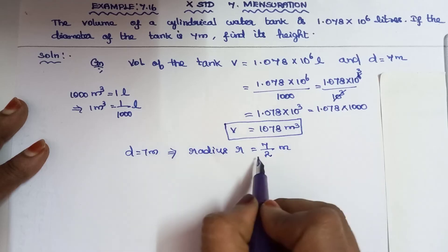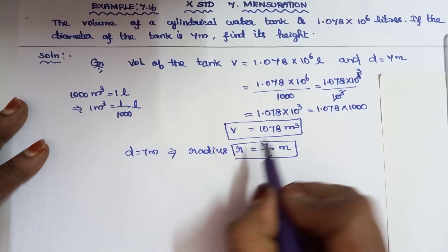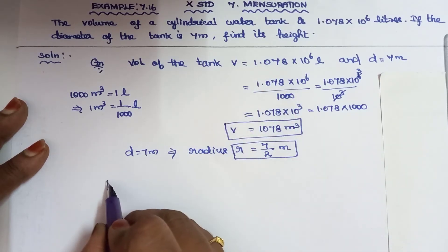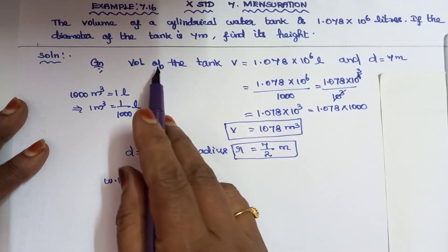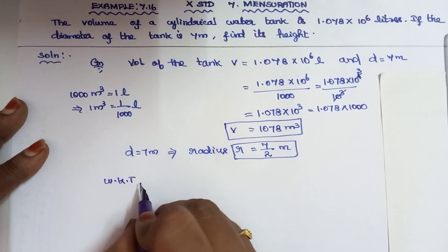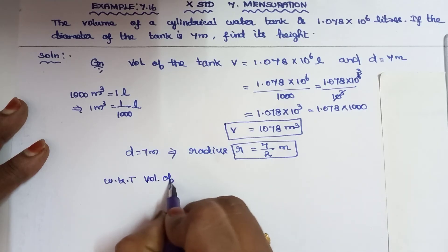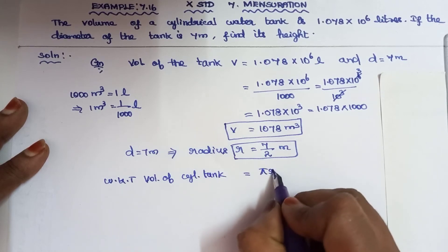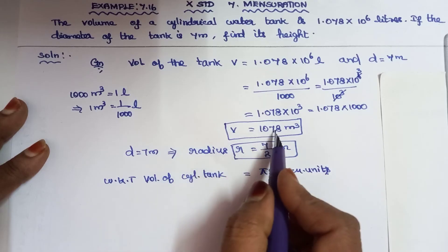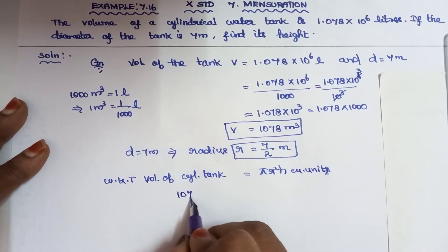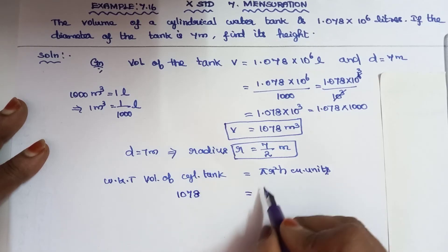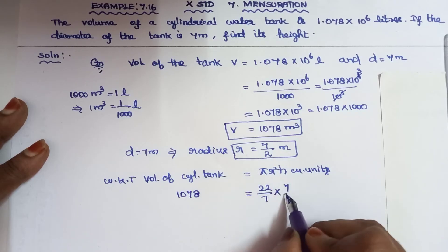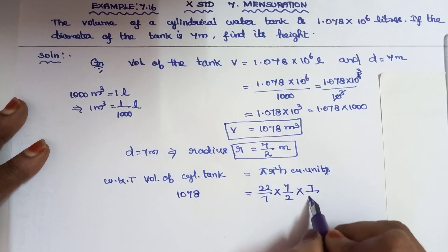We know that the volume of the cylindrical tank equals pi r squared h. The volume value we have already simplified is 1078. Pi value is 22 by 7, and r value is 7 by 2 — that is, diameter divided by 2. So r squared equals 7 by 2 multiplied by 7 by 2.